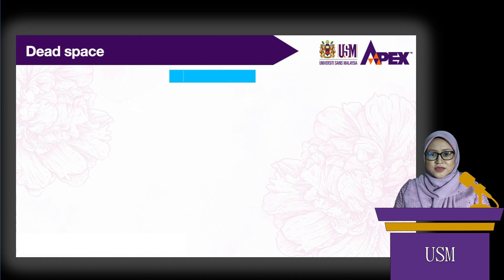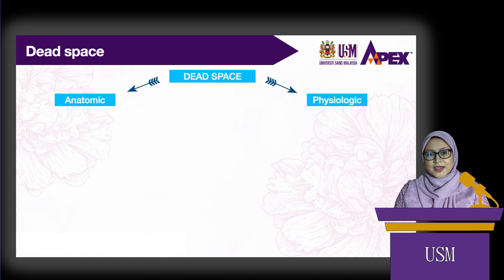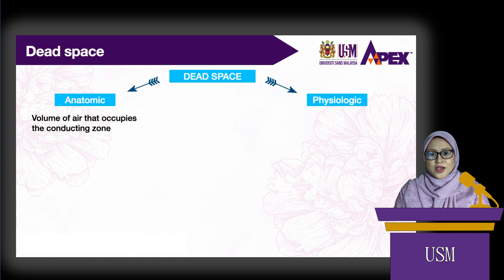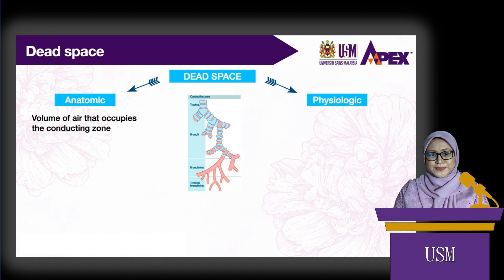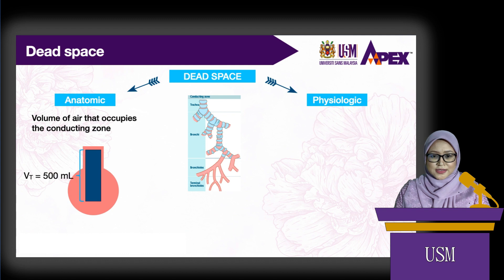There are two types of dead space: anatomic and physiologic. Anatomic dead space is represented by the volume of air that fills the conducting zone, which includes the nose or mouth to trachea, bronchi, and bronchioles. The volume is considered to be about 30% of normal tidal volume. Since normal tidal volume is about 500 milliliters, the value of anatomic dead space is 150 milliliters.